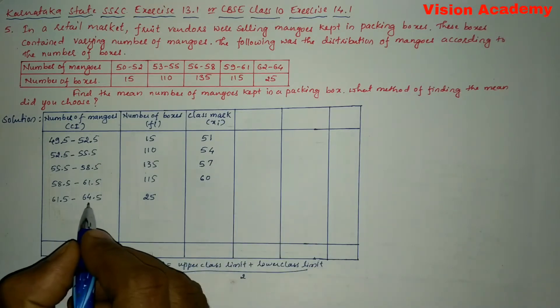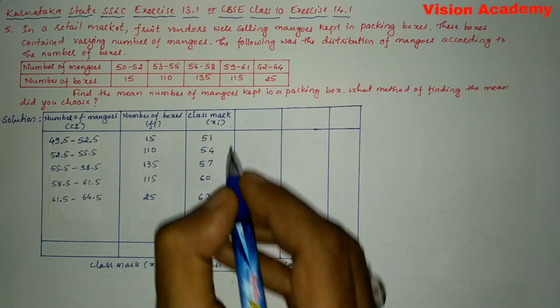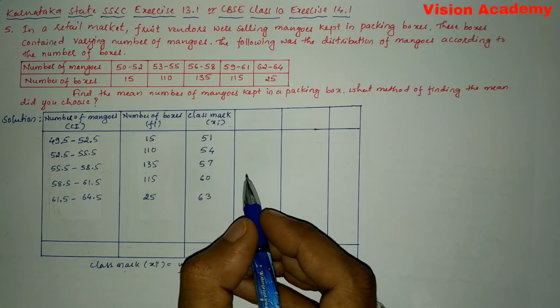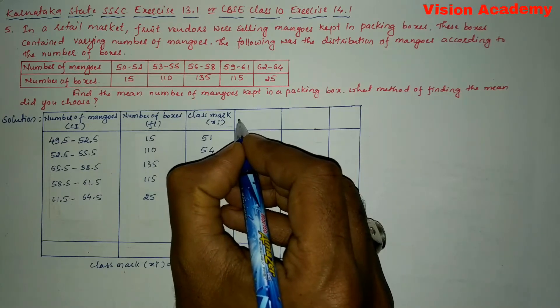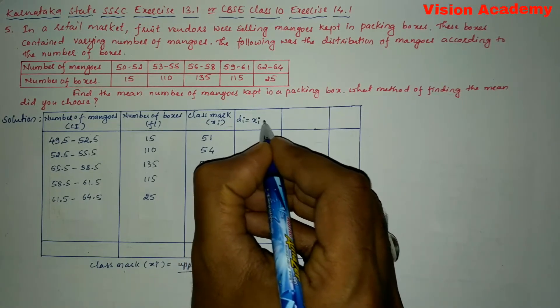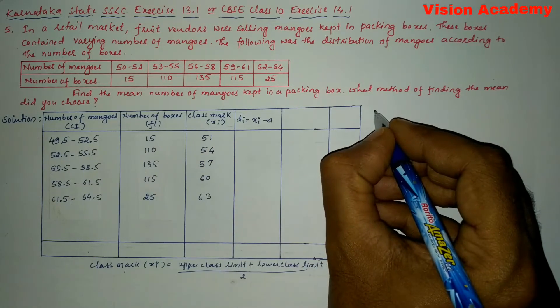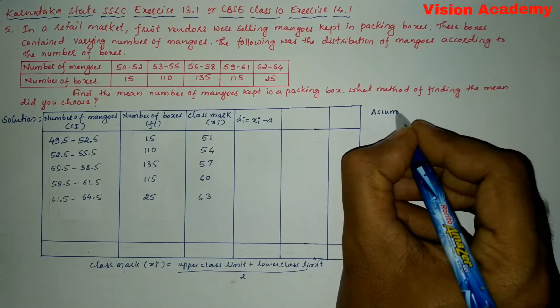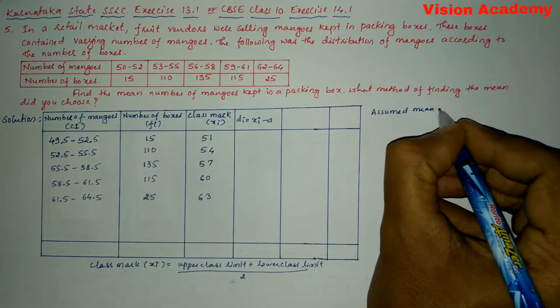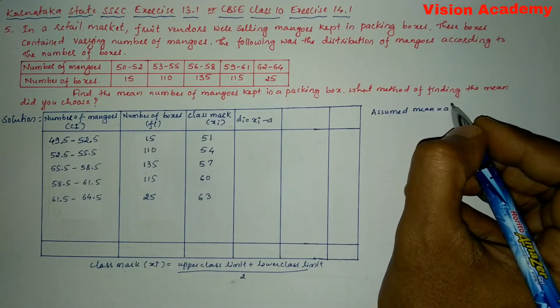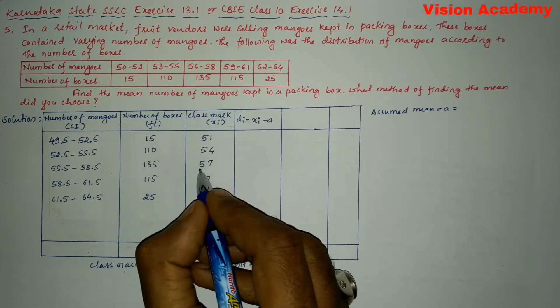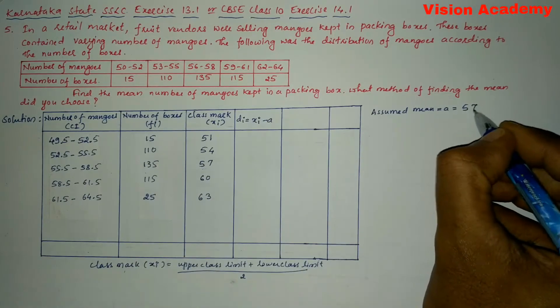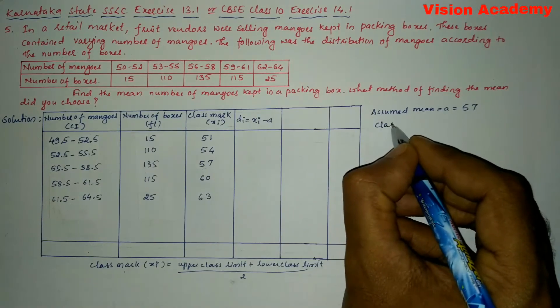Next 61.5 plus 64.5 divided by 2 gives us 63. Now here we are going to use step deviation method. Here we will write di is equal to xi minus a. So here we will take assumed mean is equal to a is equal to, let us take assumed mean as 57 because it is the middle number. So here we will write 57.